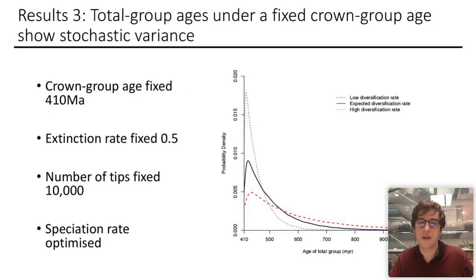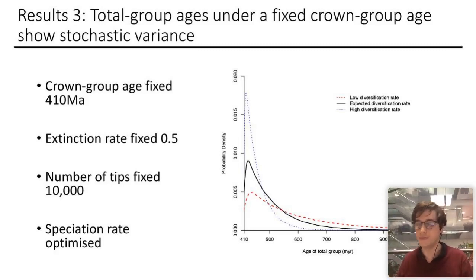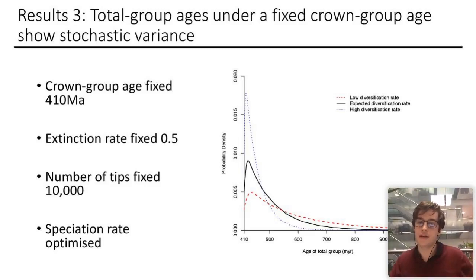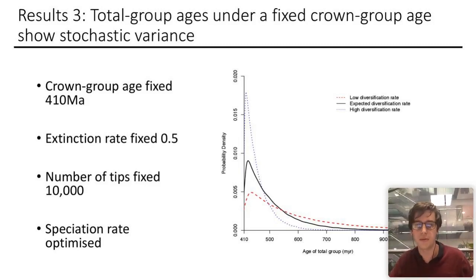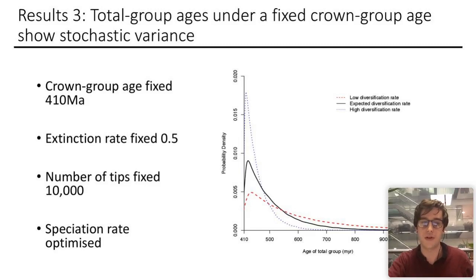Here are the results. Our crown groups were always fixed at 410, though this value doesn't matter — the results would be the same with any value. All other parameters were as before. Focusing on the black line, we see that total group ages are exponentially distributed: the bulk of the probability is close to the crown group, then there's a very long tail. We find that 95% intervals were 412 to 754 million years, so there's considerable variation.